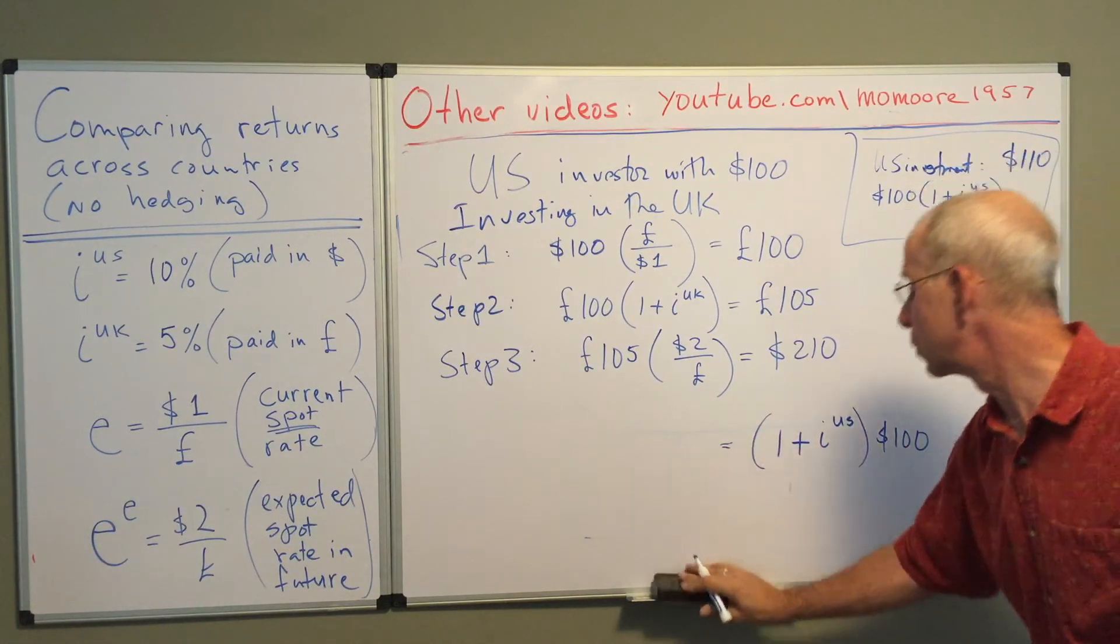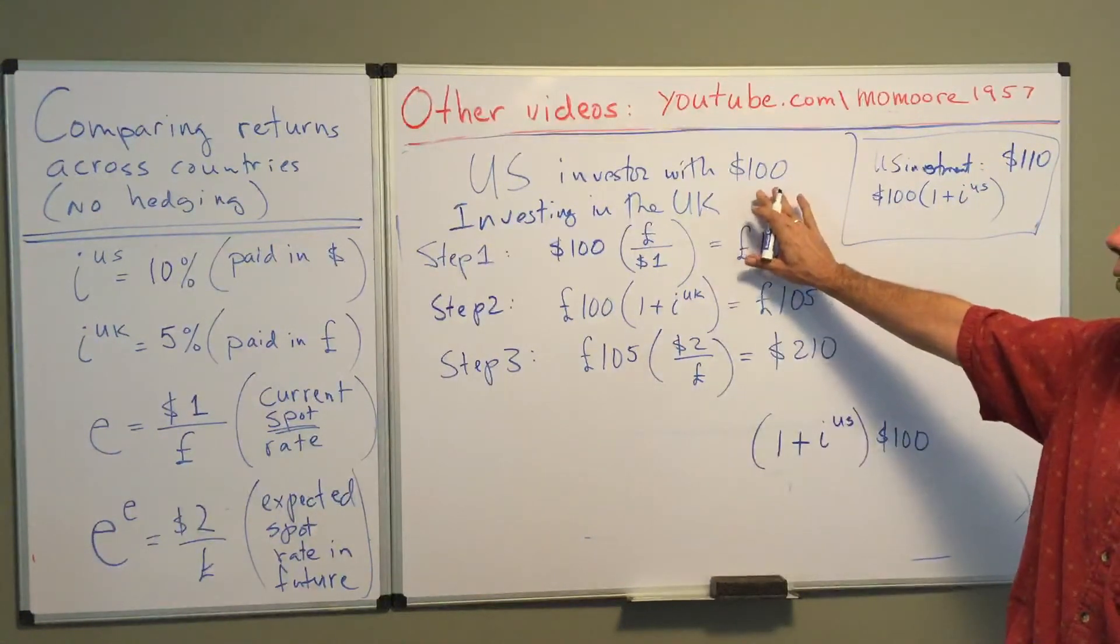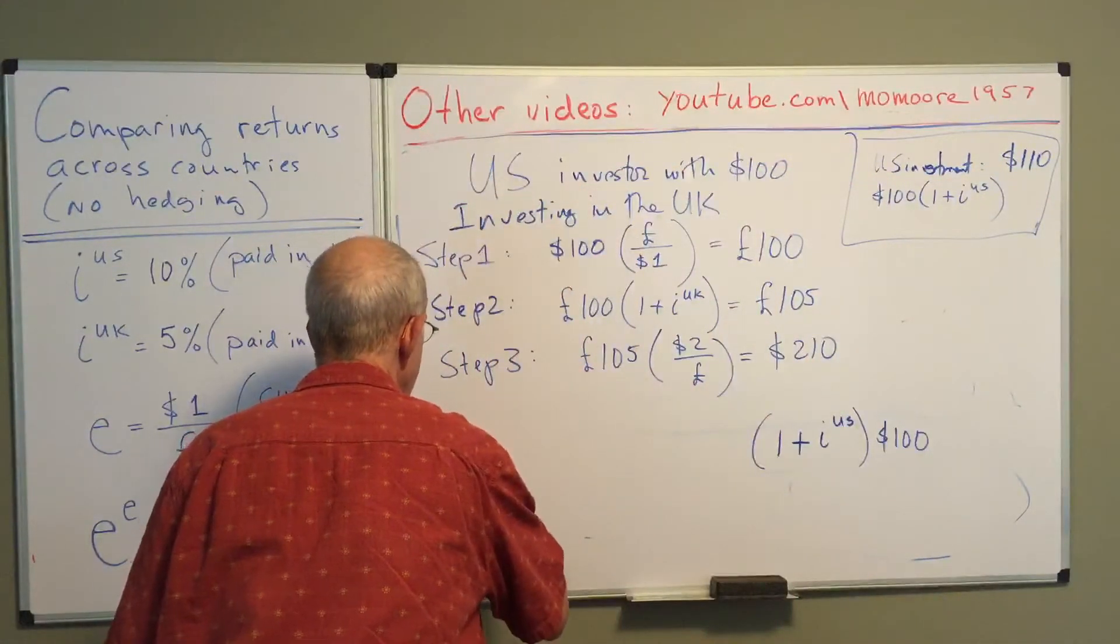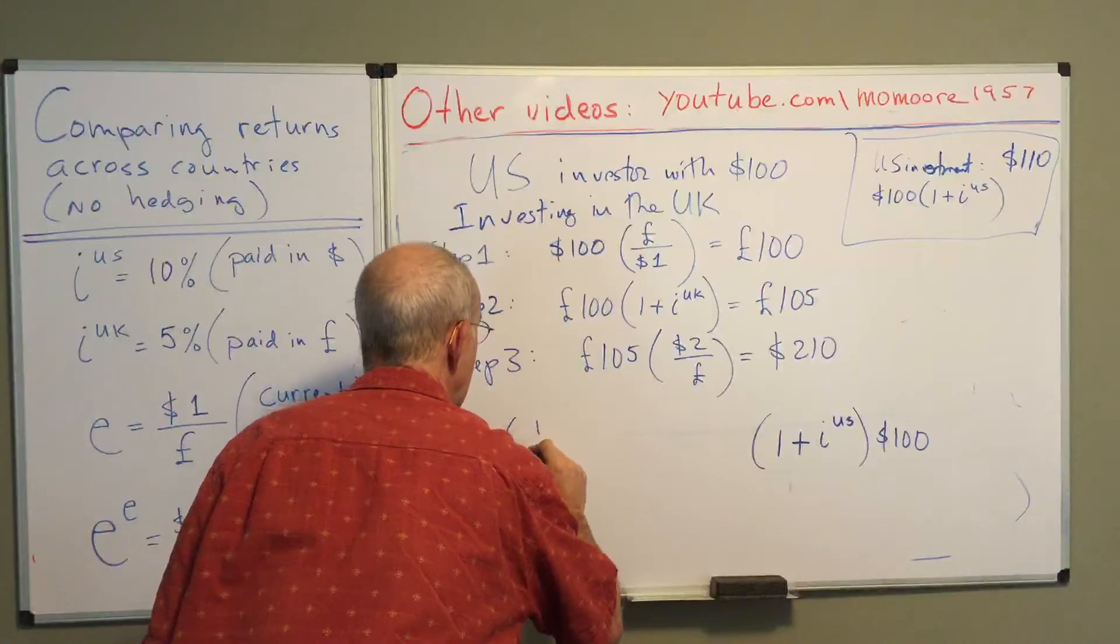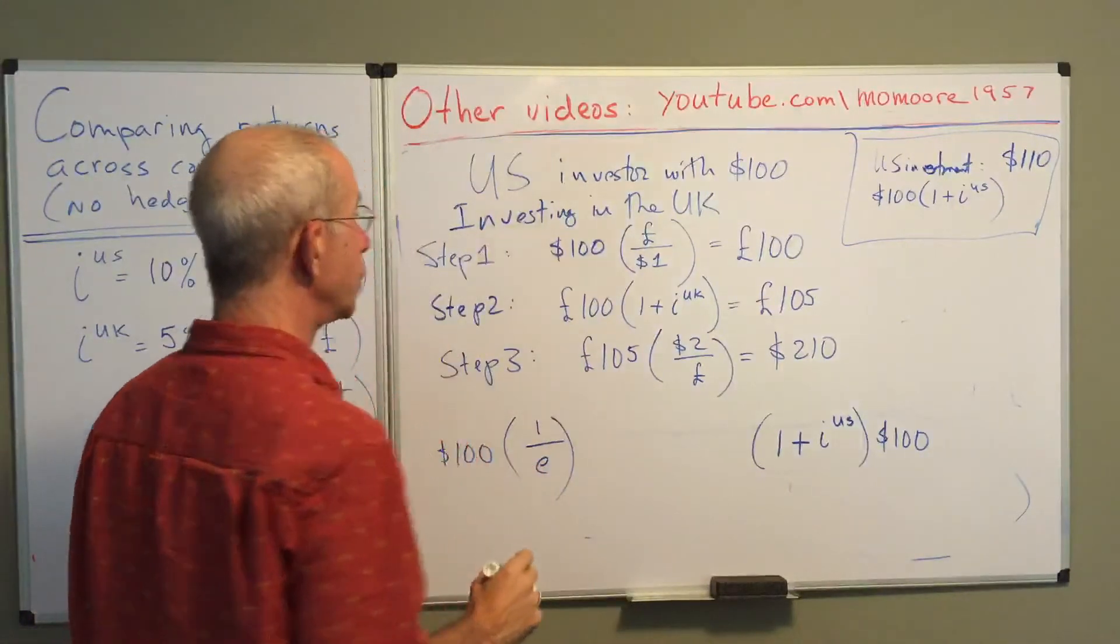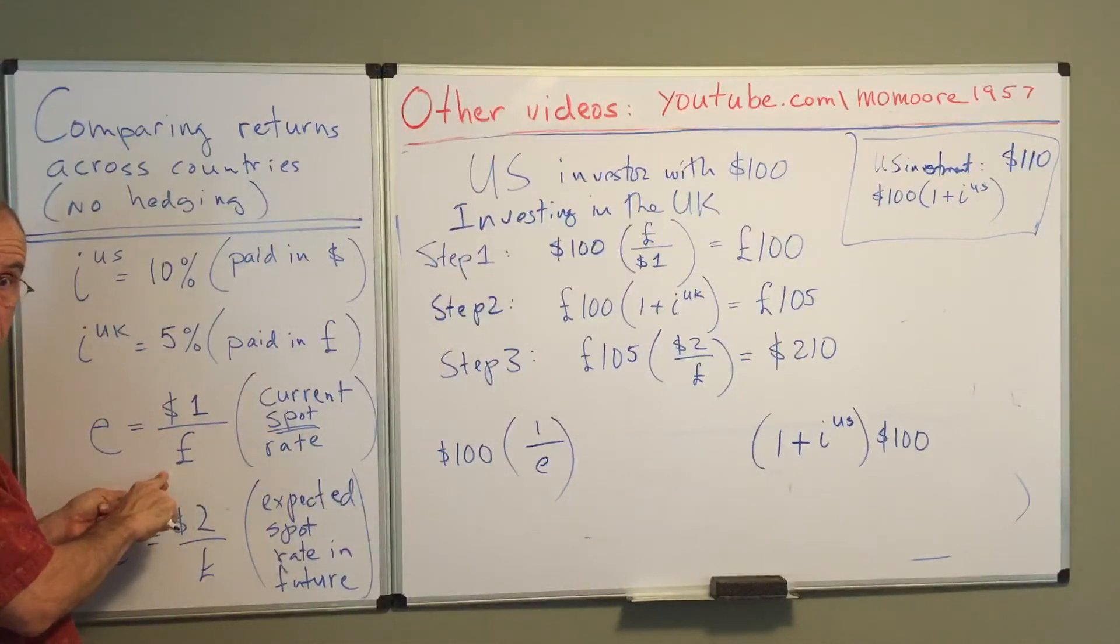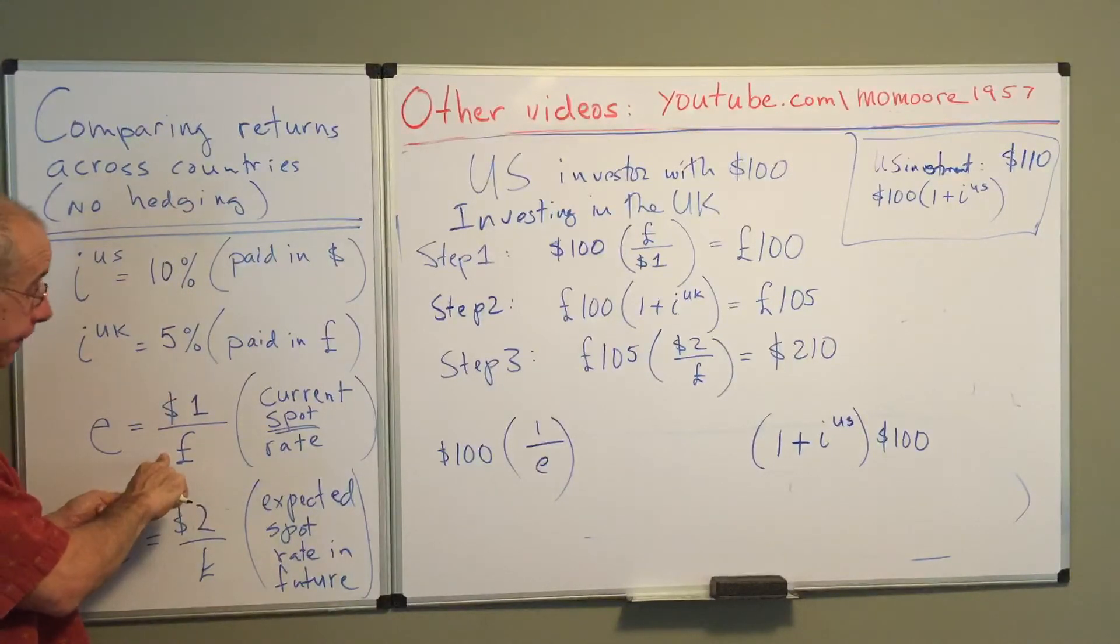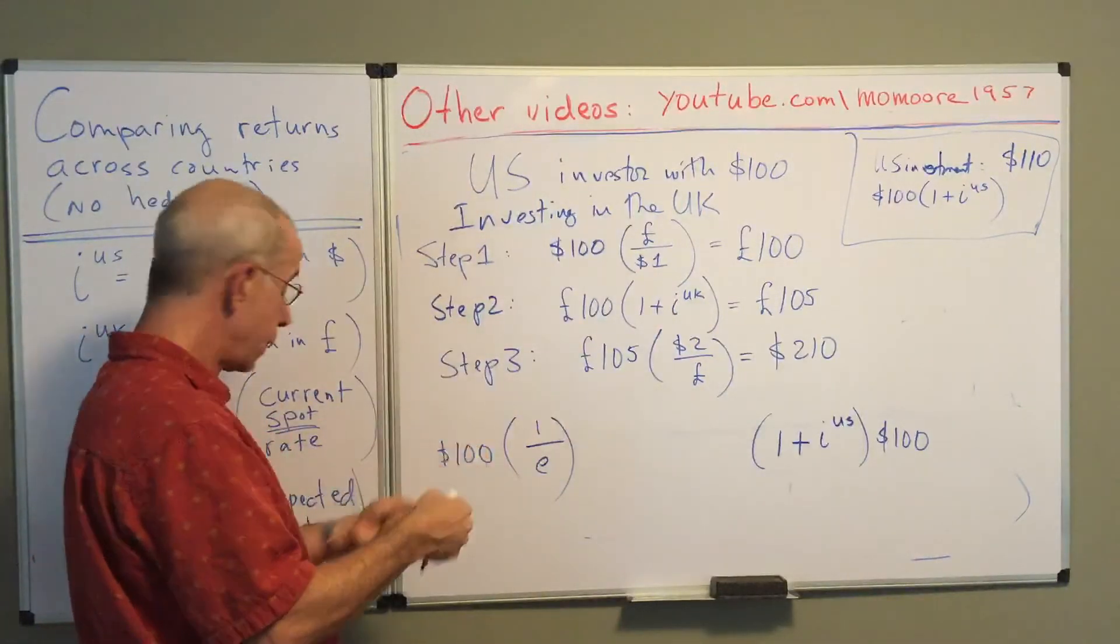And now I want to compare that with the U.S. investor investing in Britain. We're going to take our $100, and I'm converting it using this exchange rate. Now, we define the exchange rate as dollars per pound, the number of domestic currency units to buy the foreign currency. So it's dollars per pound. We use pounds per dollar, so it's one over, it's the reciprocal of the current exchange rate.